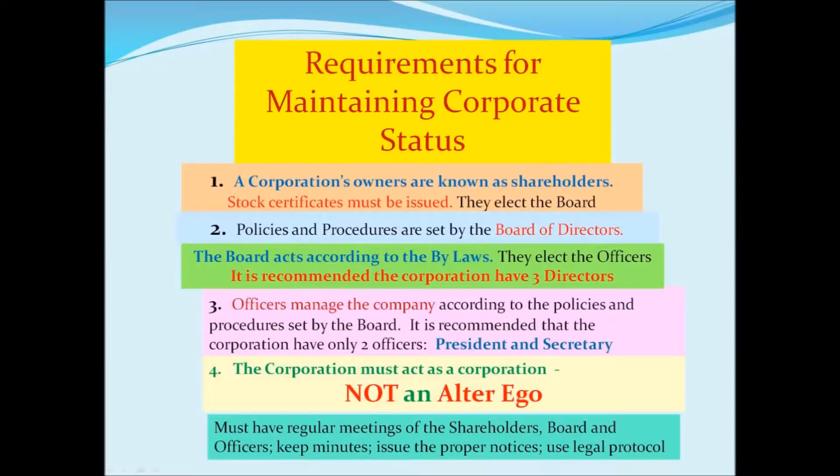We want corporations organized differently so that double taxation doesn't apply. In an S corporation, at the end of the tax year, the corporation distributes the profits using an IRS Schedule K-1 to the individual owners, and the individual owners show that as income on their income tax. The corporation itself does not pay tax. Therefore, the only designation that's different is how it's taxed — C corporations and S corporations must be organized the same; it's purely a tax designation.